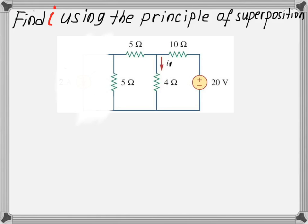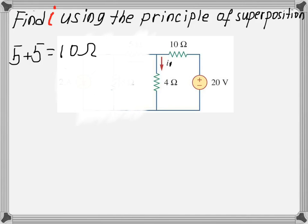To simplify the circuit, we can see there are two resistors, 5 and 5 ohms, both connected in series. So we replace them with one resistor: 5 plus 5 equals 10 ohms. Now we have a 10 ohm resistor connected in series to a group of two resistors — 4 and 10 ohms — connected in parallel. To find current I1 flowing through the 4 ohm resistor, we need to know the total current first.